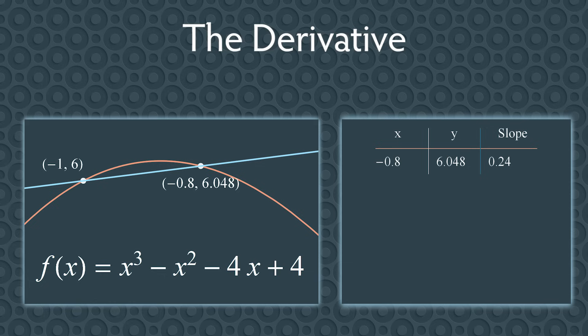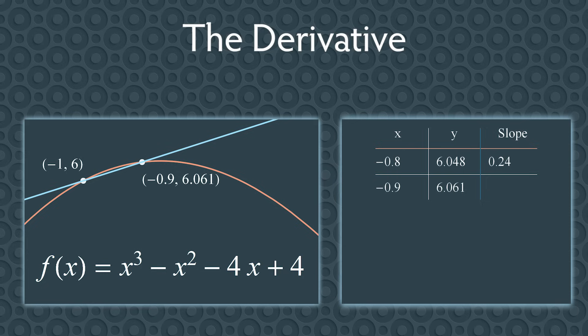What if we pick a different point that's even closer? How about negative 0.9, 6.061? If you compute the slope of the line through this point in negative 1, 6, you get 0.61.